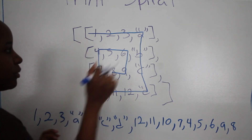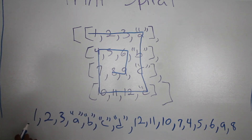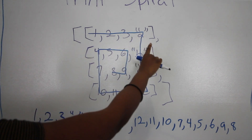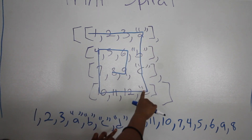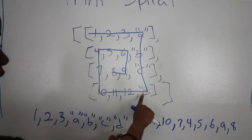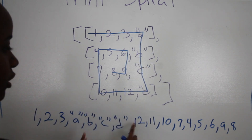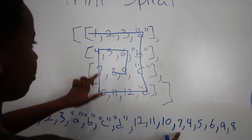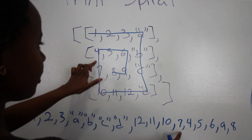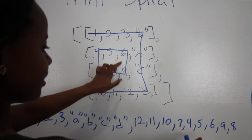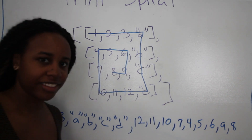From this spiral, we should have returned 1, 2, 3, A — which is the first row — and then B, C, D going down that column, and then going backwards we do 12, 11, 10, and then we print 7, and then 4, 5, 6, 9, and 8.